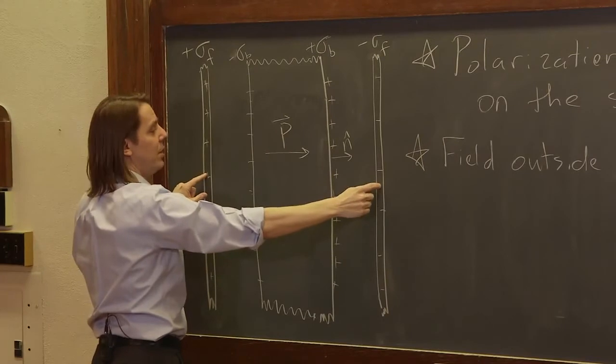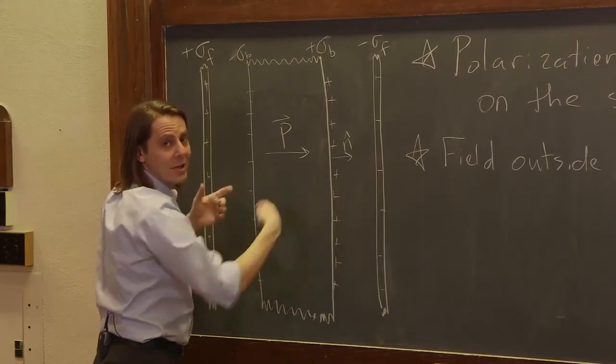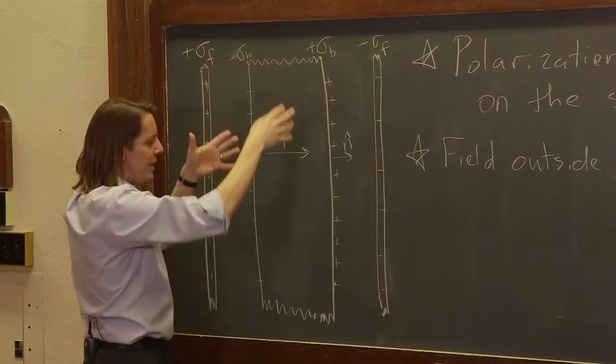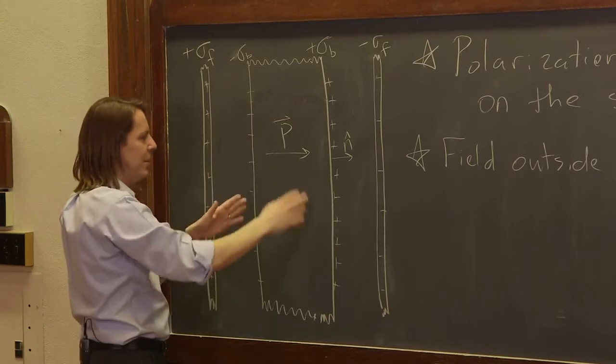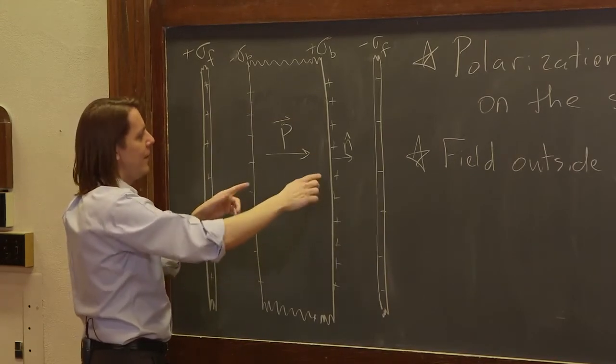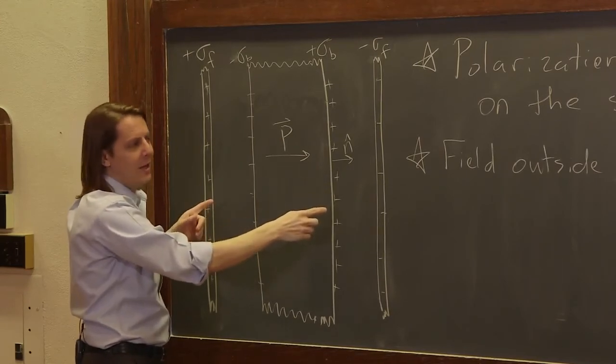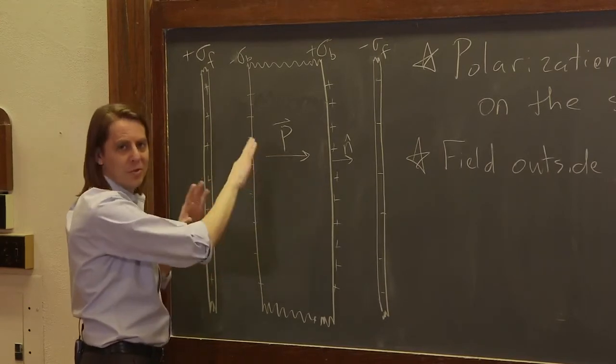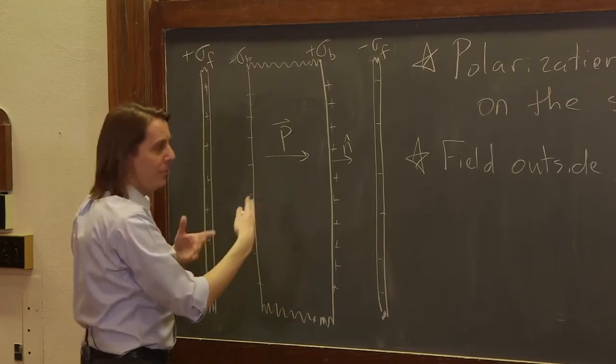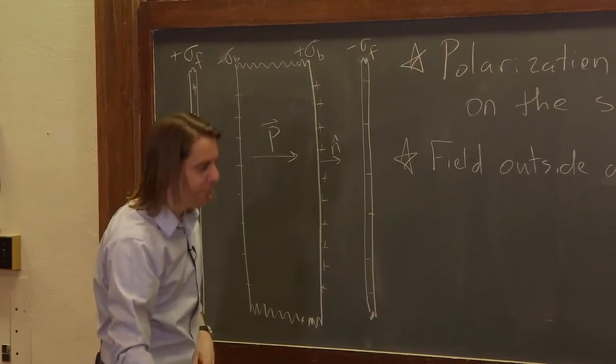It's the same reason that these two planes don't make any field out here. They just make it in between. So because we have a one-dimensional system and everything is symmetric and everything is equal on both sides, the field outside the dielectric is not perturbed. That's only true for this one-dimensional simple system. In other systems, the field outside the dielectric can be perturbed.